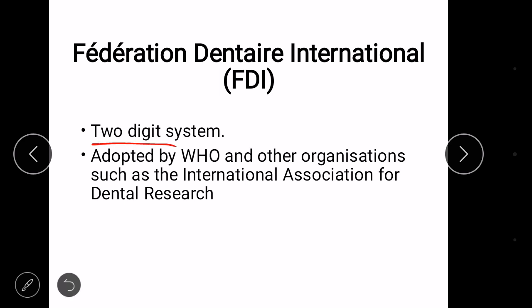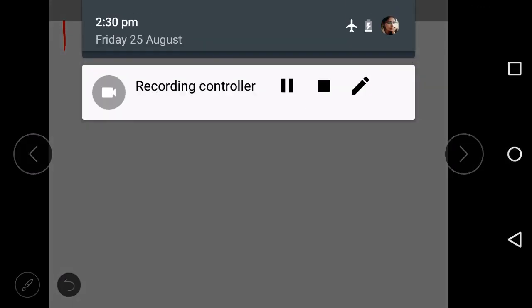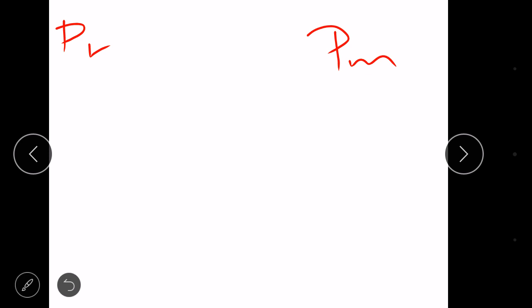Two digit system. Two digit: first digit and a second digit. First digit for quadrant and second digit for tooth. This system is adopted by WHO and other organizations like International Association for Dental Research. Let's see primary quadrants and permanent quadrants. Primary and permanent quadrants. That is our first digit.